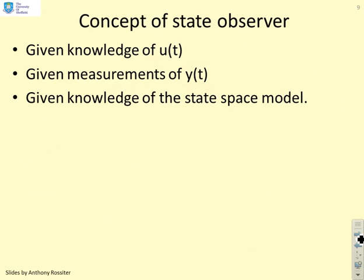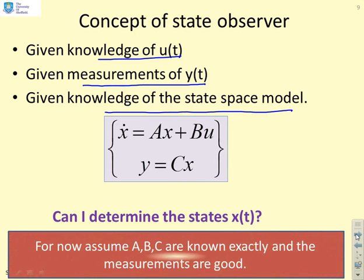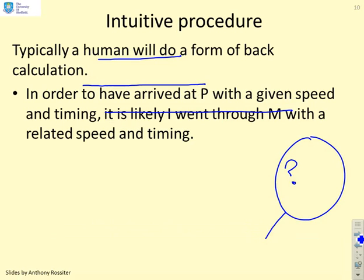So what's the concept of a state observer? Given knowledge of the input, knowledge of the measurements of the output, and knowledge of the state space model, can I determine the states x of t? For now, we're going to assume that the parameters A, B, and C are known exactly and the measurements are good. One might ask: what would happen if you did not know A, B, and C reliably, or if the measurements were poor — would you still be able to determine the states x of t?